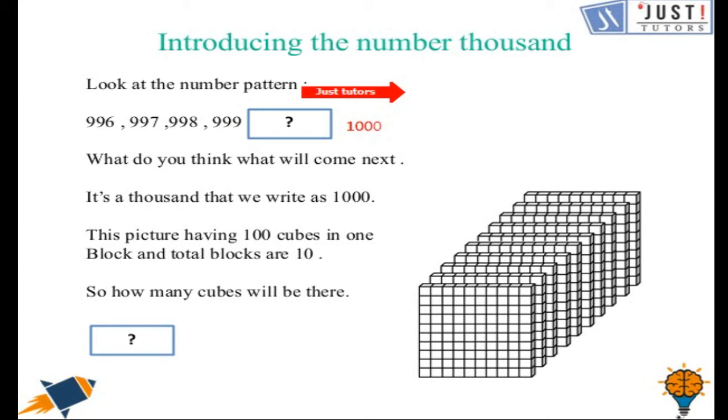So we say it like this, 1000s. And it's like we have 10, 100 cubes in one block. And in total, we have 10 blocks. So if we count total cubes, we will get the number 1000. In that case, we will times 10 by 100 and we will get 1000.